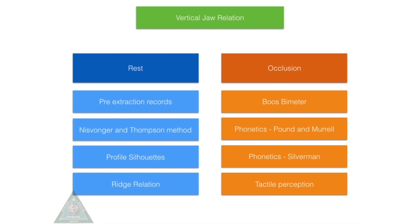Vertical dimension at rest can be recorded with the help of pre-extraction records. There are three pre-extraction records we can use: pre-extraction radiographs, pre-extraction photographs, and pre-extraction models.